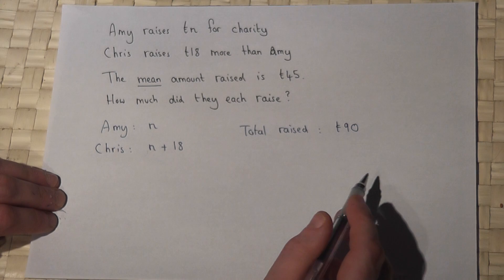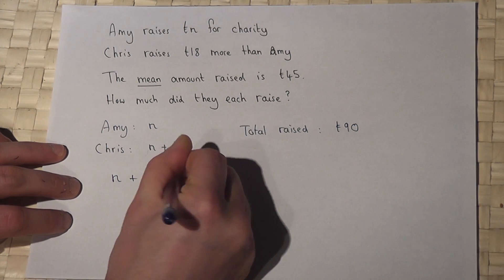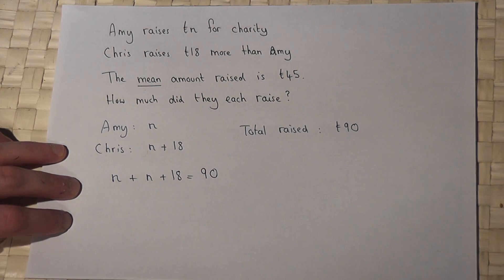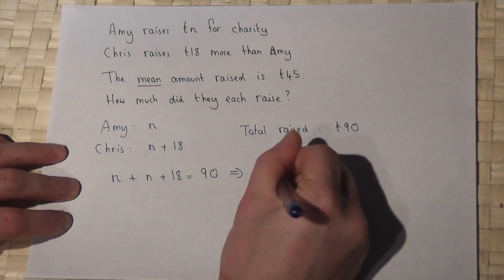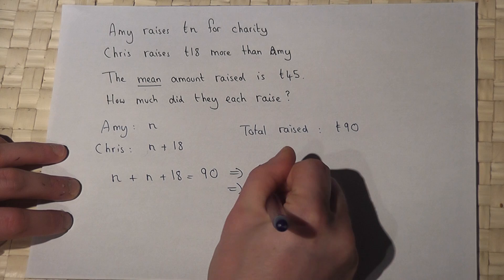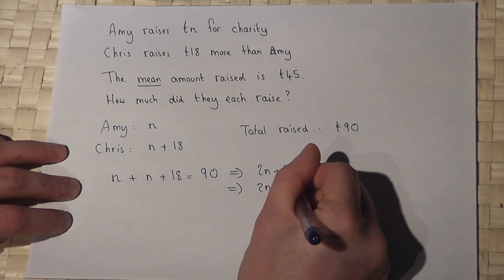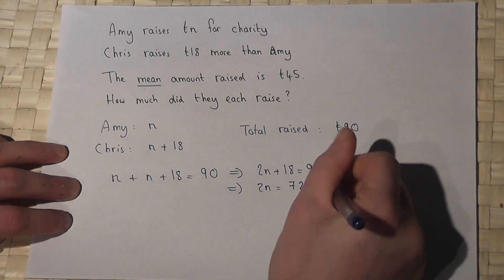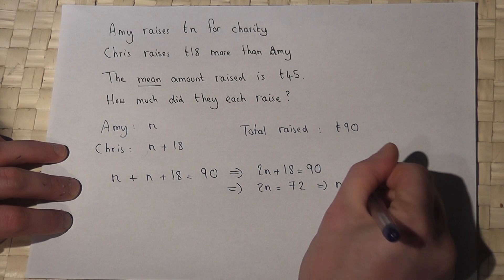So I can therefore set an equation up: Amy's amount plus Chris's amount must equal 90 pounds. This tells me that 2n plus 18 is 90. So 2n equals 90 take 18, which equals 72. Therefore n equals 72 divided by 2, which is 36.